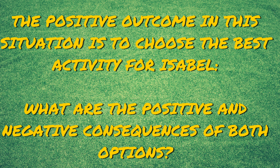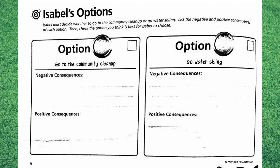Let's discuss the possible consequences of each option, keeping in mind that consequences can be positive or negative. Look at the next section in your workbook titled 'Isabel's Options.' List the possible negative and positive consequences of both of Isabel's options, then check the option you believe is the best activity for Isabel to choose. Let's share our answers with the class.